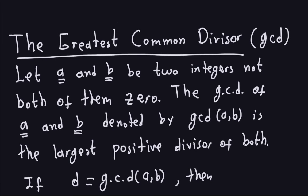Hello and welcome again. We started talking about the number theory concepts that we need for asymmetric cryptography. The next concept we need to talk about is the greatest common divisor, or in short GCD. We will need this later to define some other concepts. Just to recall, let's remember what the definition of the greatest common divisor is.